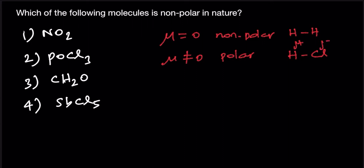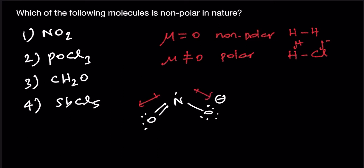For NO2, we know that we have a total of 17 valence electrons, and therefore the Lewis structure will be like this. The net dipole moment here won't cancel out — this will be the direction of the dipole, and this will be the direction of the dipole. So the net dipole moment is nonzero, and therefore this molecule is polar.